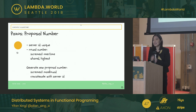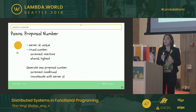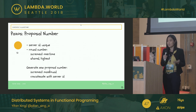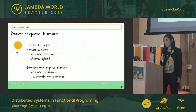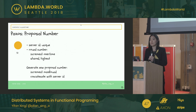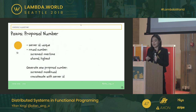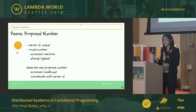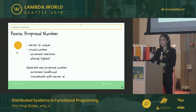What is this proposal number? Basically it's a combination of server ID and round number. The server ID guarantees uniqueness of the proposal number, and the round number gets incremented over time and is shared between all the machines. All machines keep track of the highest round number they've ever seen. To generate a new proposal number, simply increment the max round number and concatenate it with the server ID.